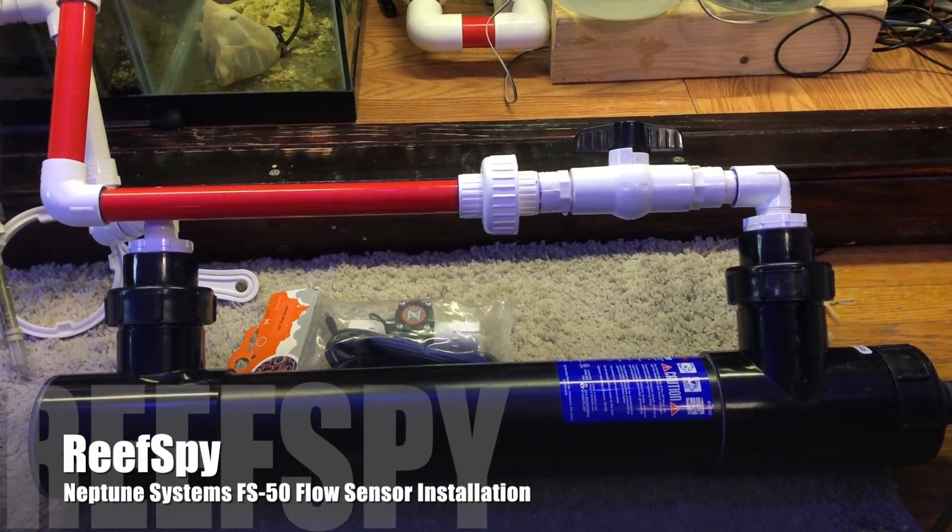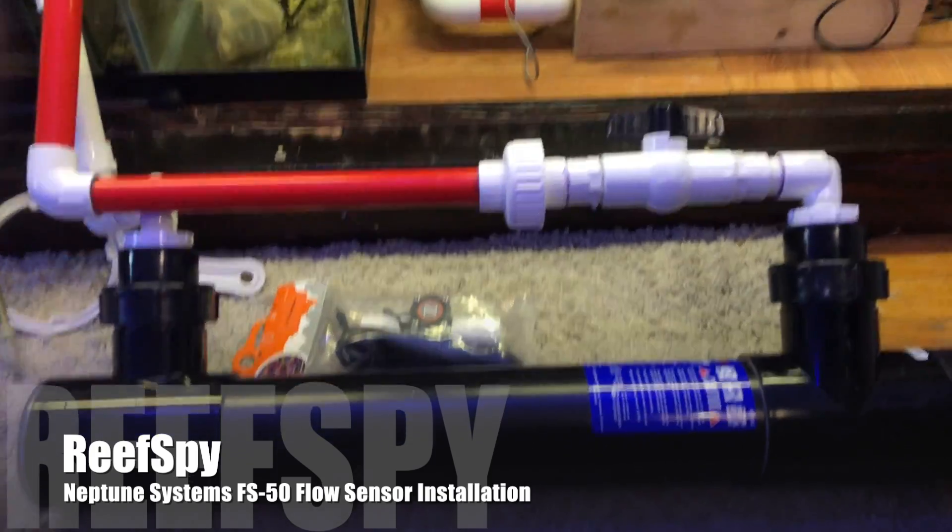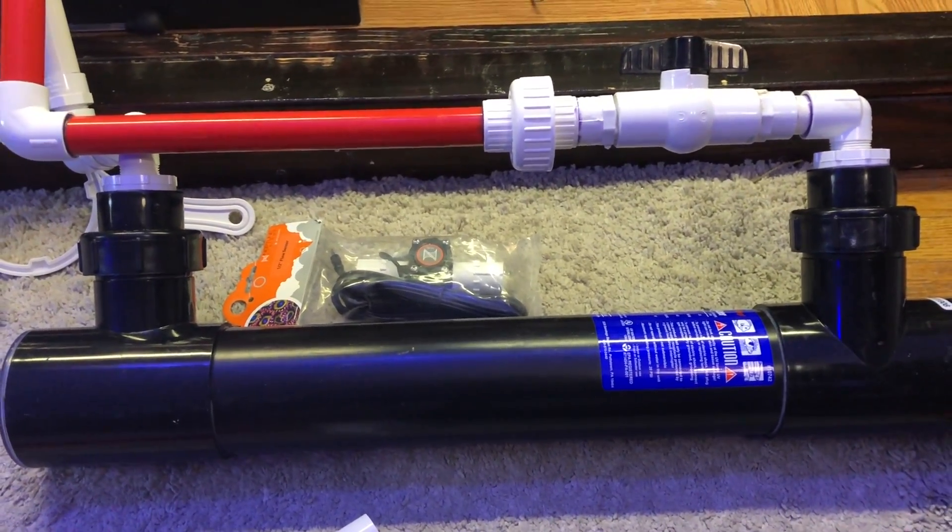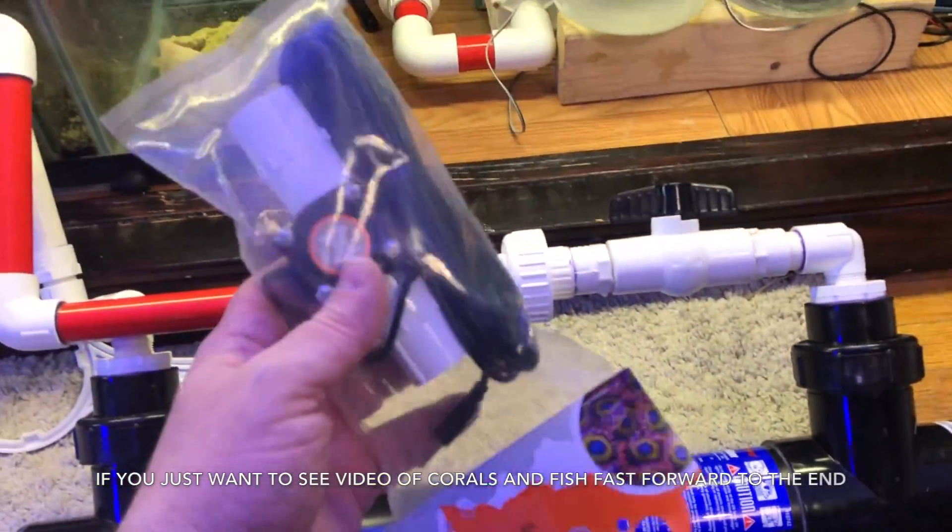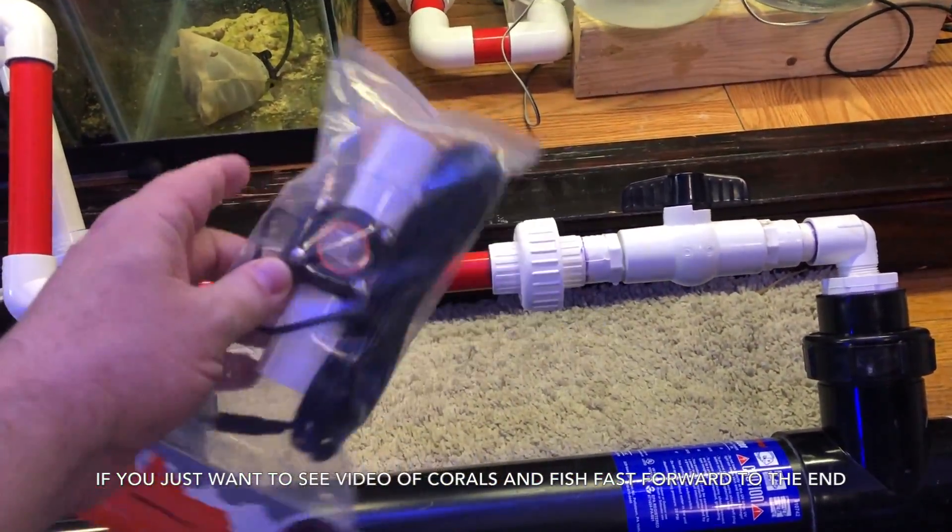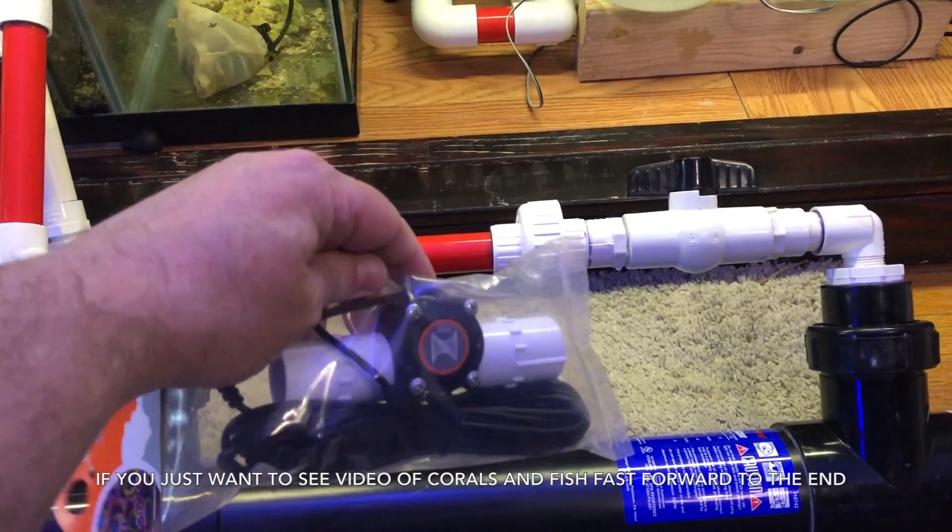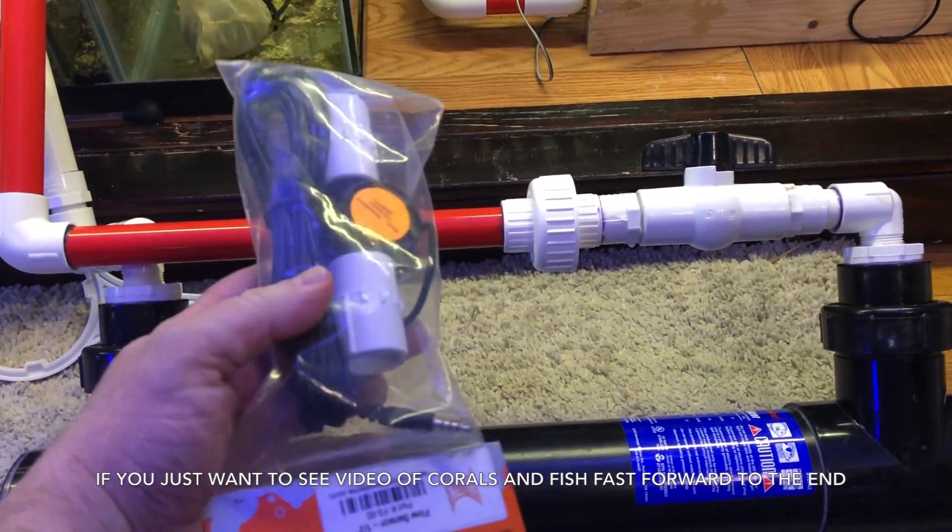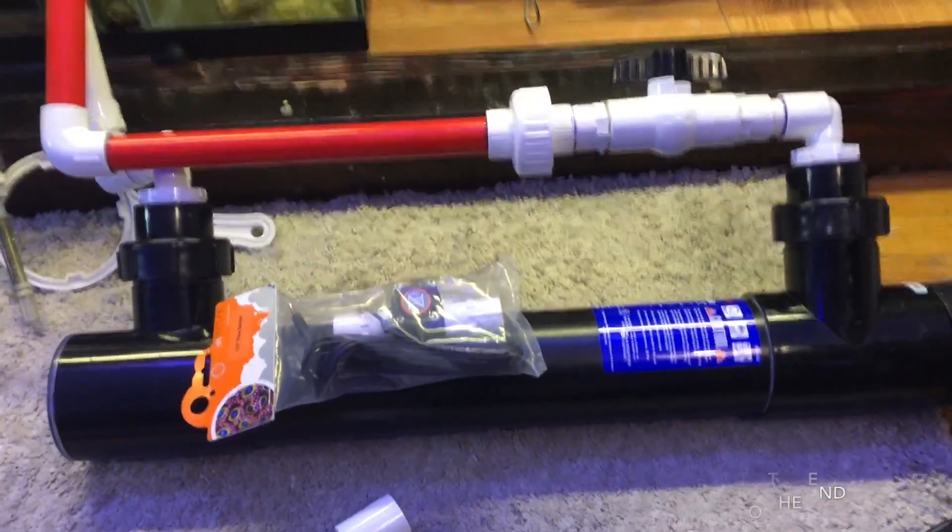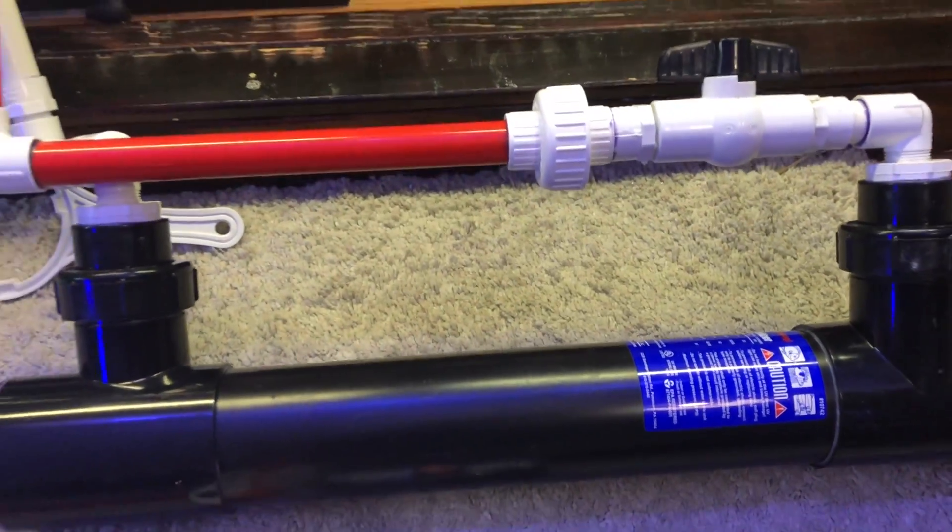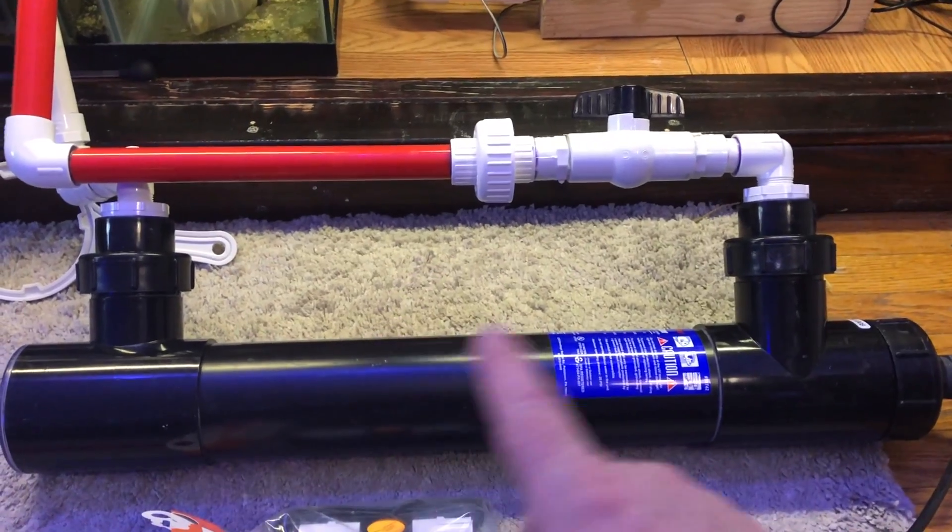It is time to do a job I've been putting off for far too long. It is now May and I bought this flow monitoring module, a half inch version, way back on Black Friday in November of last year. I've always had the intention of putting that on my UV sterilizer.